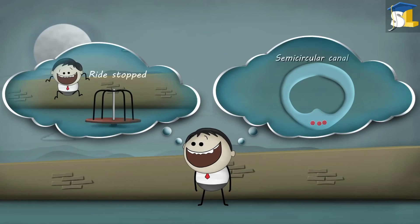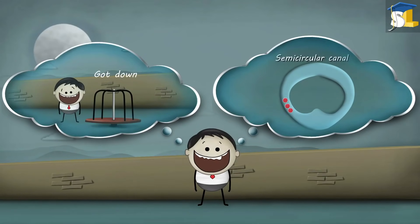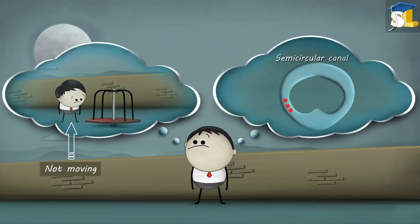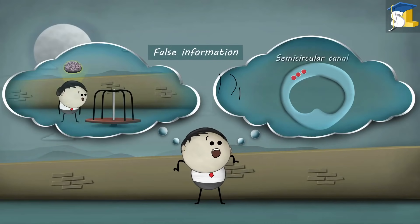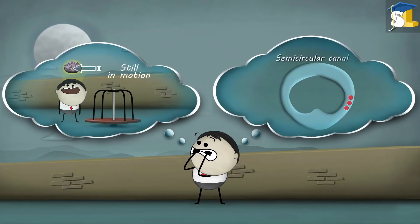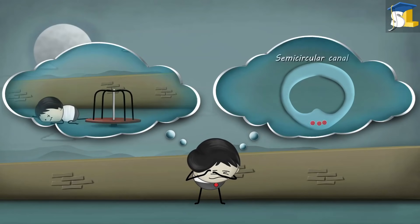However, when the ride stopped and you got down from the ride, the fluid was still in motion due to inertia. Hence, even though you were not moving, the moving fluid gave your brain false information telling you that you are still in motion. Thus, you are not able to maintain your balance.